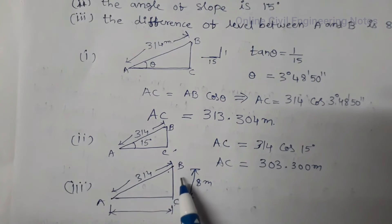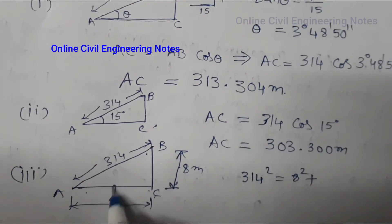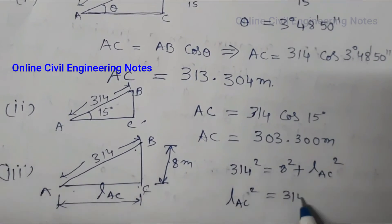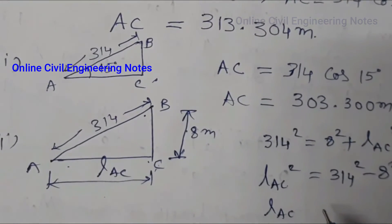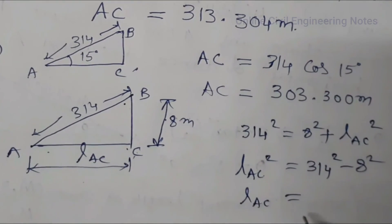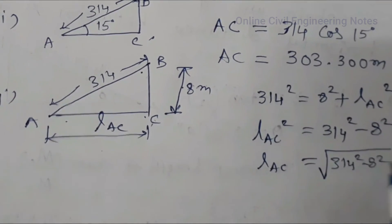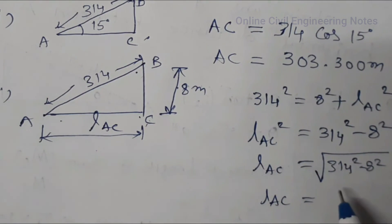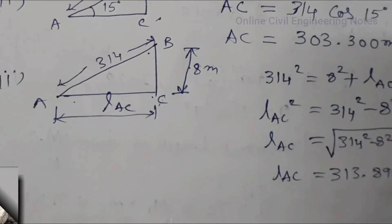Based on the Pythagoras theorem: the hypotenuse squared equals adjacent squared plus opposite squared. So 314 squared equals 8 squared plus AC squared. Therefore, AC squared equals 314 squared minus 8 squared, and AC equals the square root of 314 squared minus 8 squared. The horizontal length of AB is equal to 313.898 meters.